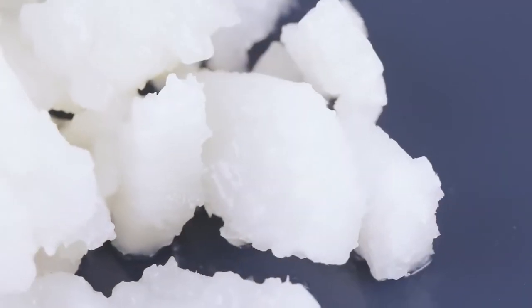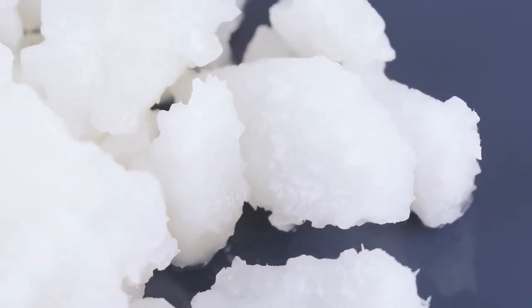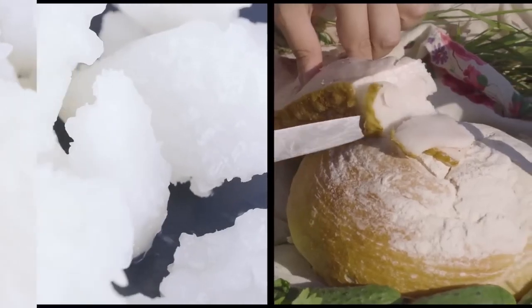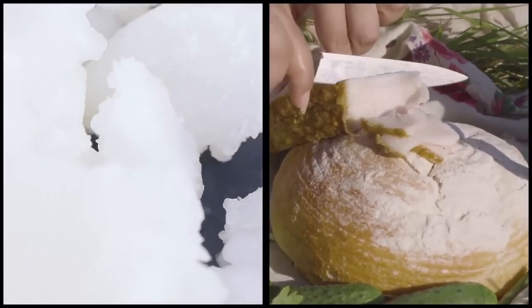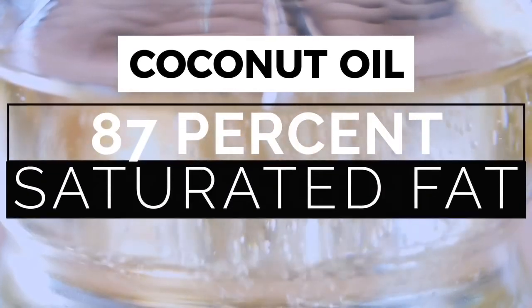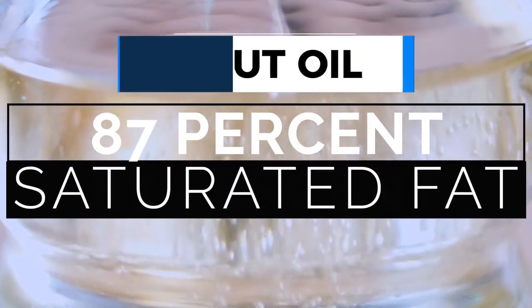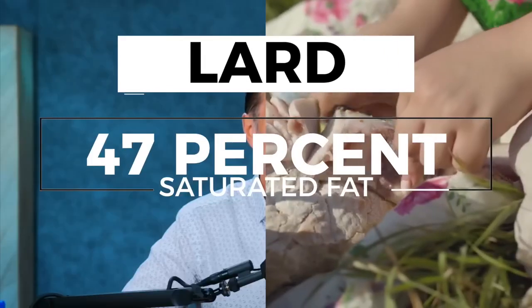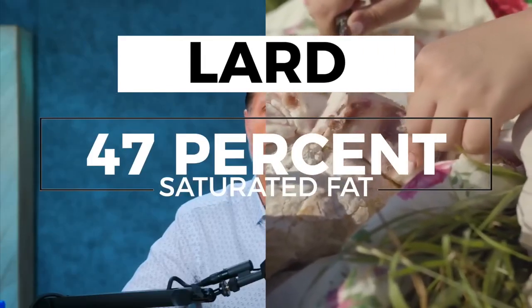For example, if we take coconut oil and we compare that to lard, both of them are solid at room temperature. Both of them have saturated fat. And interestingly enough, coconut oil has 87% saturated fat compared to lard, which only has 47%, not even 50% of it is saturated fat.